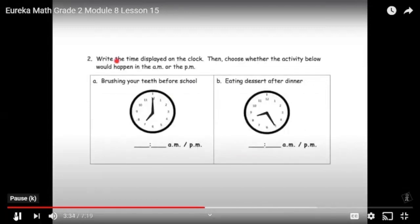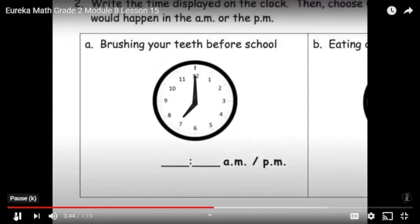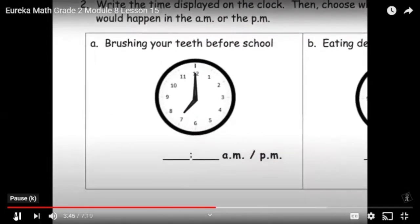So here it says, write the time displayed on the clock, and then choose whether the activity would happen in the AM or PM. So the first thing we're going to do, we're going to look at that clock. And this clock really looks like it is saying it is seven o'clock. Exactly, seven o'clock. But if we are brushing your teeth before school, that makes this an AM activity. So that's seven AM.